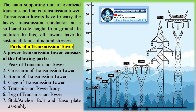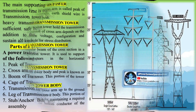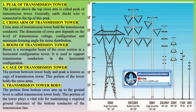Suspension or tangent towers are used primarily on tangents but are often designed to withstand angles in the line only up to 2 degrees, in addition to wind, ice, and broken conductor loads. If the transmission line traverses relatively flat, featureless terrain, 90% of the line may be composed of this type of tower. Thus, the design of the tangent tower provides the greatest opportunity for the structural engineer to minimize the total weight of steel required for the transmission system.